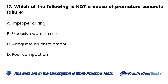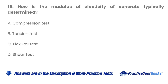Question 17. Which of the following is not a cause of premature concrete failure? A. Improper curing. B. Excessive water in mix. C. Adequate air entrainment. D. Poor compaction.